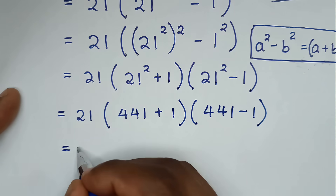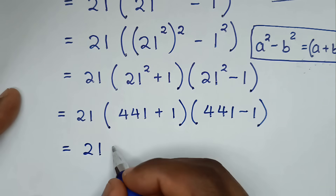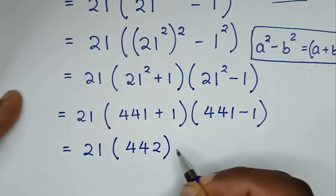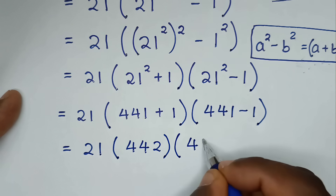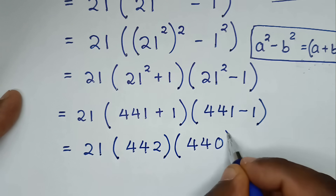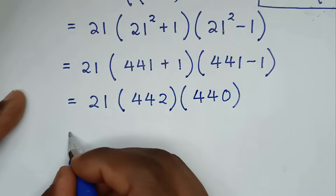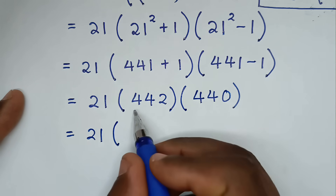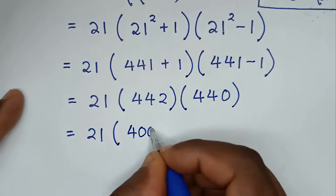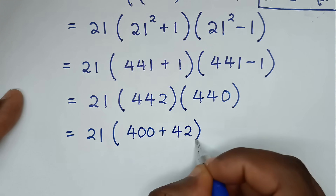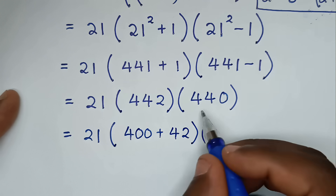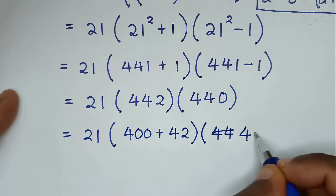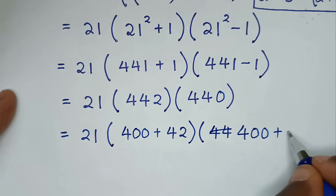So it will be 21 times 442 times 440. To make multiplication easier, we write 442 as 400 plus 42, and 440 as 400 plus 40.